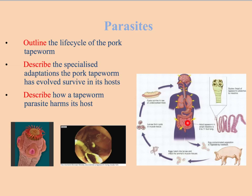The adult tapeworm is basically a long, flat, thin ribbon made up of segments called proglottids. These proglottids contain both male and female reproductive organs, so they self-fertilise. When they're mature, the end proglottids just drop off and are egested out in the faeces. Now if you don't have very good sewage disposal or hygiene, then animals like pigs grazing in a field could ingest the eggs present in human faeces.